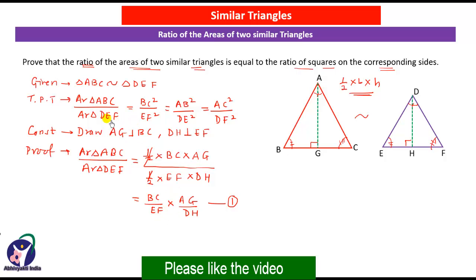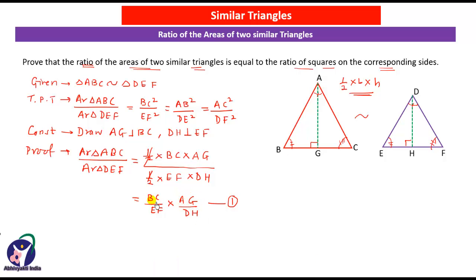We have to prove that area of triangle ABC upon area of triangle DEF equals BC² upon EF². But we are getting BC upon EF multiplied by AG upon DH. If we prove that AG upon DH is also equal to BC upon EF, then replacing it we will get BC² upon EF². So next we have to prove AG upon DH equals BC upon EF.